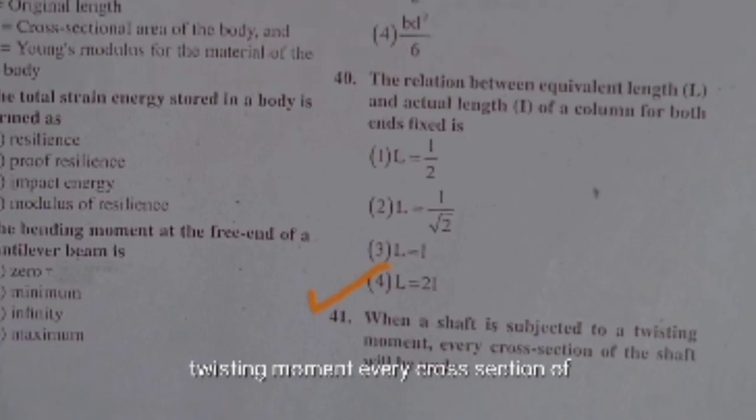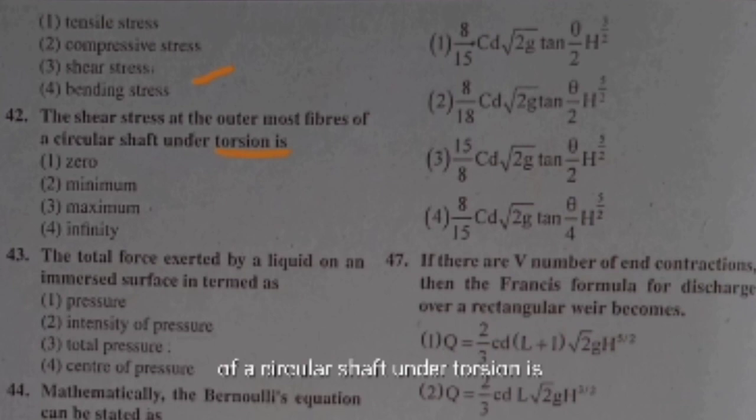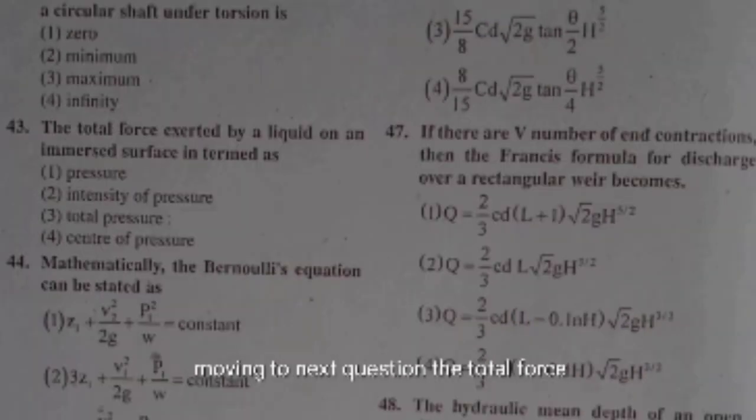When a shaft is subjected to a twisting moment, every cross-section of the shaft will be under shear stress. The shear stress at the outermost fiber of a circular shaft under torsion is maximum, and it is minimum at the center or innermost point of the shaft.